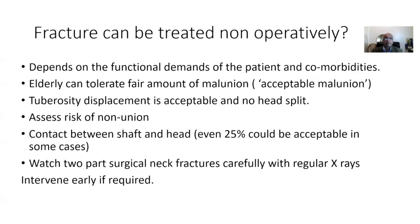So if you have a fracture in front of you, how do you decide to treat it non-operatively? It depends on the functional demand of the patient and their comorbidities. Elderly patients can tolerate a fair amount of malunion — called acceptable malunion. Younger patients may be treated differently, but a lot of these fractures can also be treated non-operatively. Tuberosity displacement has to be acceptable, and there should not be any head split. One also assesses the risk of non-union — if you feel the fracture has a very high risk of non-union, you may want to intervene early. Even a little bit of contact between shaft and head will be okay as long as the tuberosities and the head are in a reasonably right place.